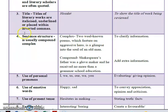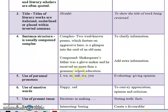Moving on, you have sentence structure. They are usually compound or complex sentences. An example of a complex sentence: 'Two well-known poems, which feature an aggressive hero, is a glimpse into the soul of an old man.' An example of a compound sentence: 'Shakespeare's father was a glove maker, and he received no more than a grammar school education.' The purpose of a complex sentence is to clarify information, and the compound sentence is to add extra information.